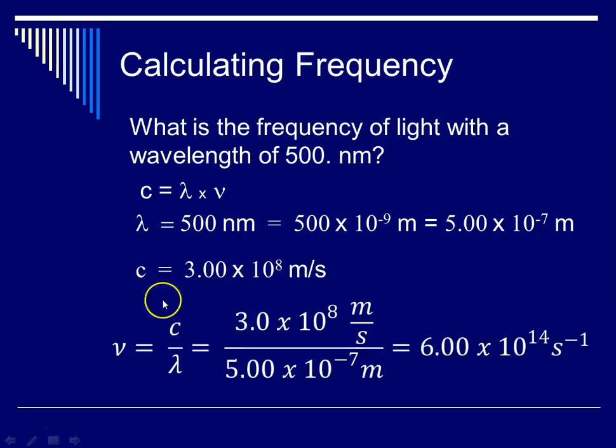So now we can go in and solve. Using algebra, we rearrange this equation and solve for frequency, which is nu, and that's going to be C, the speed of light, divided by lambda, the wavelength. And then plugging in our numbers, C gets plugged in here, and then we plug in our wavelength. You'll notice that meters over meters will cancel, and we will be left with a unit of 1 over seconds. When we plug this into our calculator, we will get 6.00 times 10 to the 14th seconds to the minus 1.